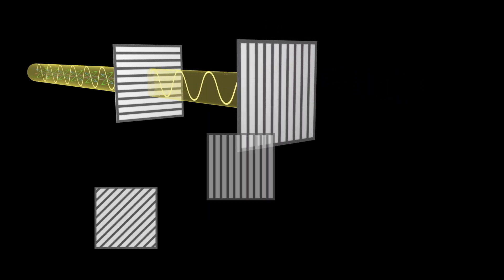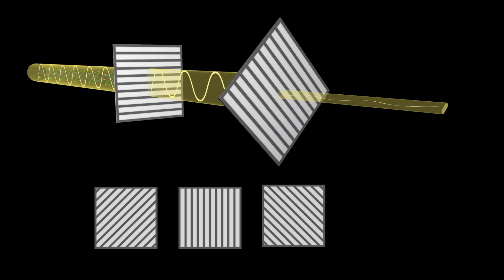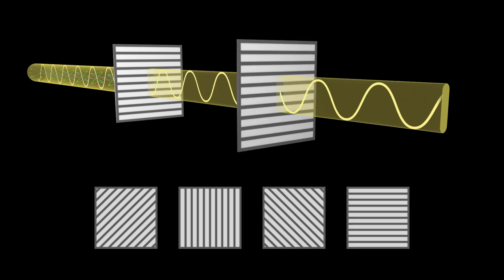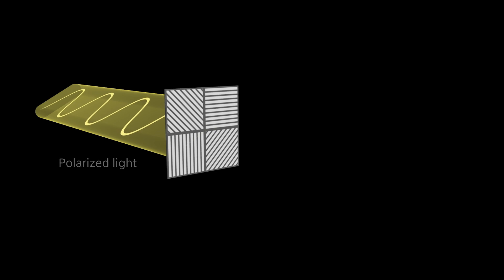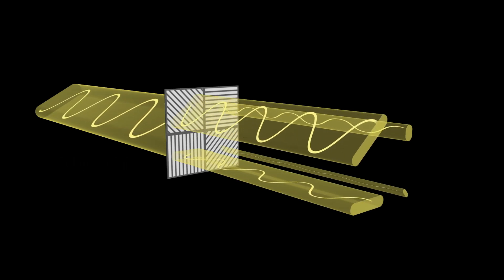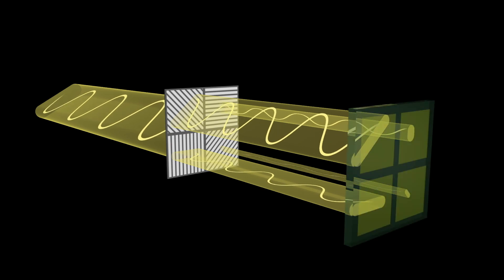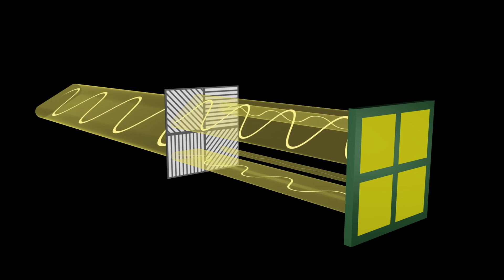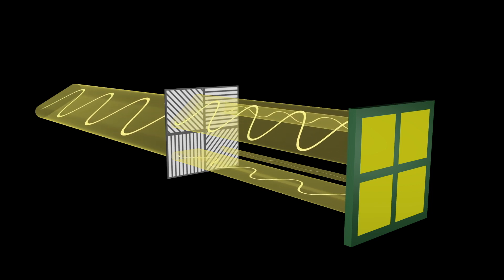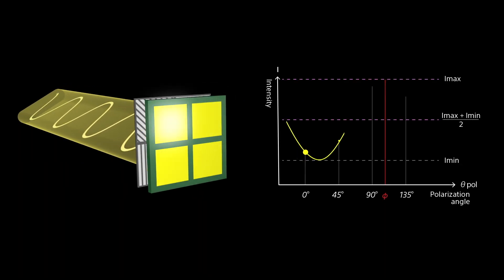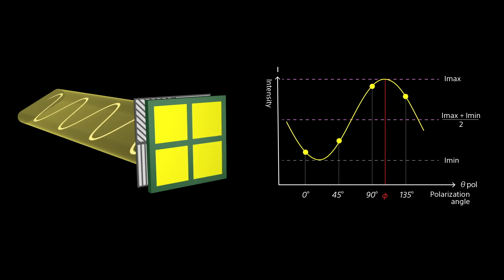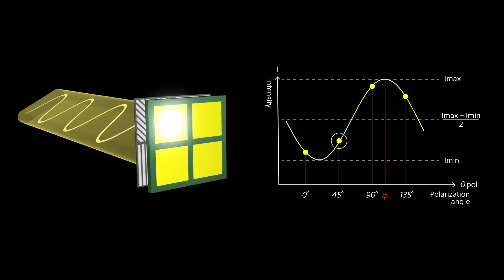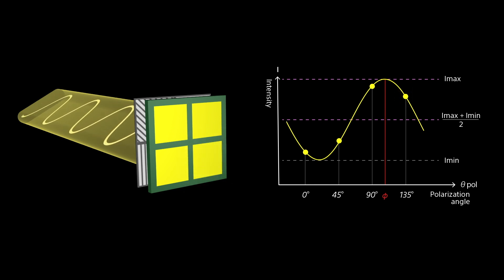PolarSense has a multi-direction on-chip polariser. The intensity of the light through each polarised pixel is different. PolarSense can capture multi-directional polarised images in a single frame. The intensity of the light is converted into an electric signal in the image sensor and recognised as a digital value. The degree and direction of polarisation can be calculated with these values.